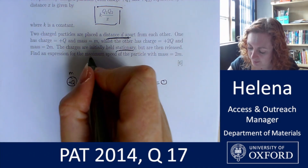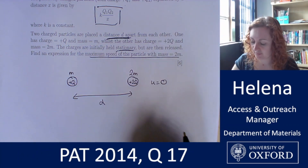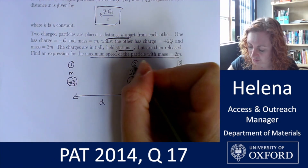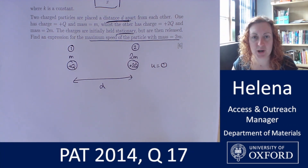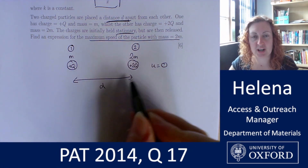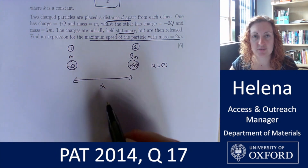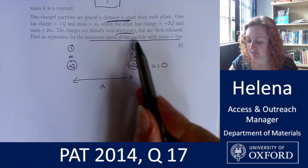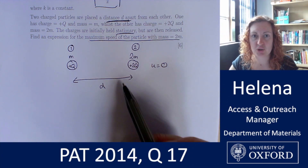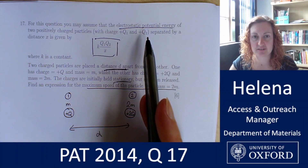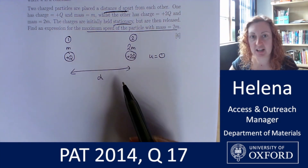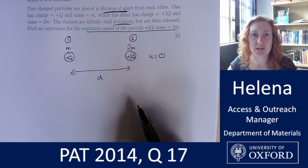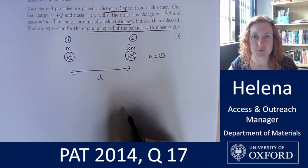We're being asked to find an expression for the maximum speed of the particle with mass 2m. So they're both positively charged — like charges — so they're going to repel each other. As we release them from rest, this one is going to move this way and this one is going to move this way. The point of maximum speed is when all of the initial electrostatic potential energy is converted into kinetic energy. We could also think of that as the distance between them going to infinity.